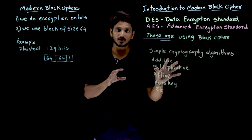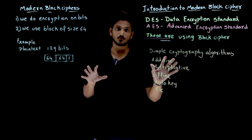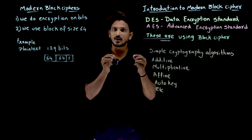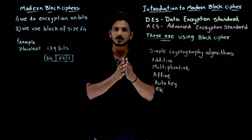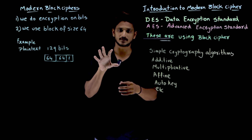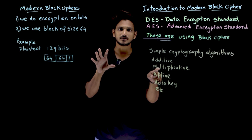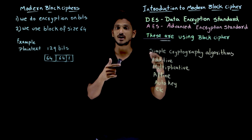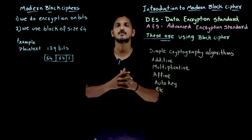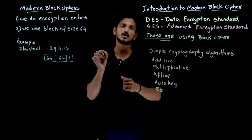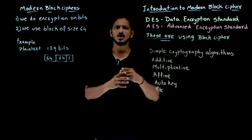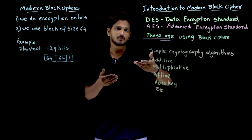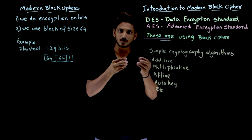From our previous classes, we need to understand a few key points. If you want to create a cryptography algorithm, the algorithm should be very very complex. Those previous algorithms are simple ones — that is why we can easily crack the algorithm logic, identify the key, and identify the plain text from the cipher text. So the point is: we need a complex system.